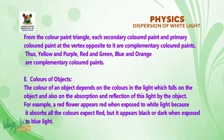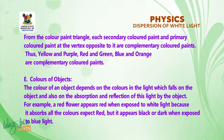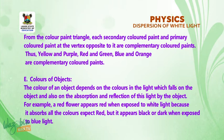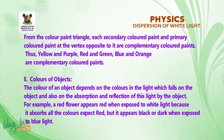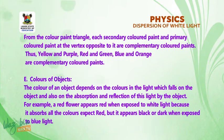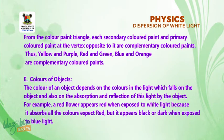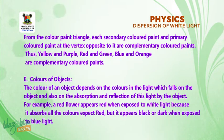Now let's look at colors of objects. How do we see objects? The color of an object depends on the colors in the light which falls on the object and also on the absorption and reflection of this light by the object. For example, a red flower appears red when exposed to white light because it absorbs all the colors except red, but it appears black or dark when exposed to blue light.